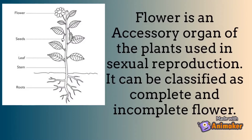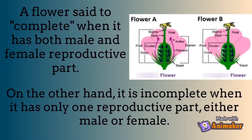Talking about the flower — a flower is an accessory organ of the plant used in sexual reproduction. It can be classified as complete and incomplete. A flower is said to be complete when it has both male and female reproductive parts. On the other hand, it is incomplete when it has only one reproductive part, either male or female.